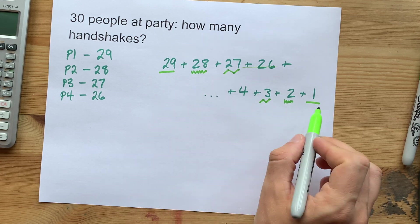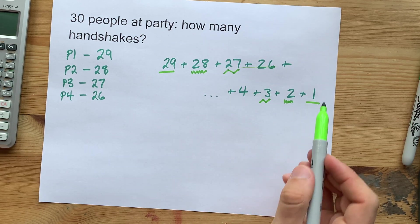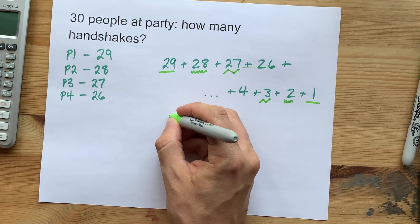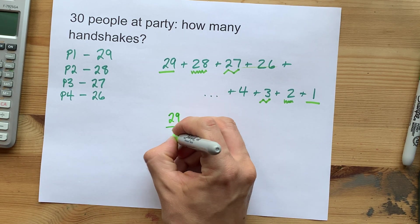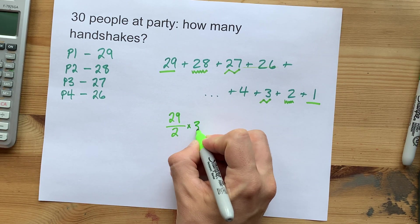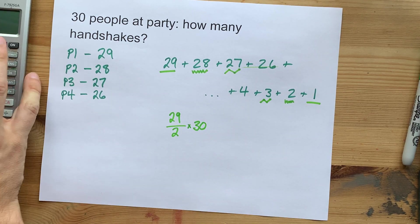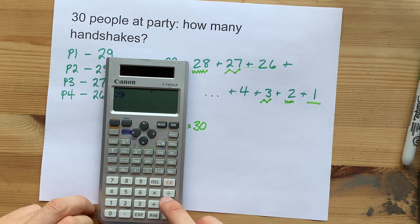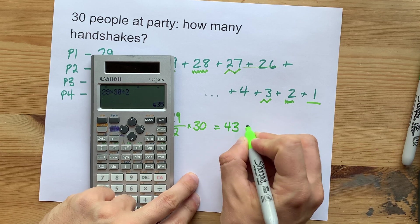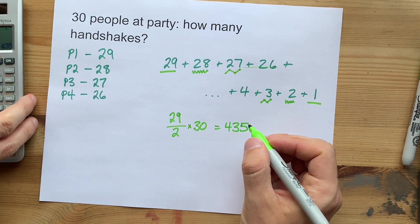The question is how many pairs of numbers are there? Well, we started at 1 and we got up to 29. So whatever half of 29 is, 14.5 pairs of 30 each. Cool. 29 times 30 divided by 2. That gives me 435 handshakes. Nice.